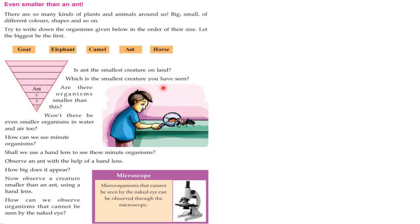It is the smallest creature you have seen. How can we see a minute organism? How can we use a hand lens? Shall we use a hand lens to see these minute organisms? Observe an ant with the help of a hand lens. How big does it appear? Observe a creature smaller than an ant using a hand lens.